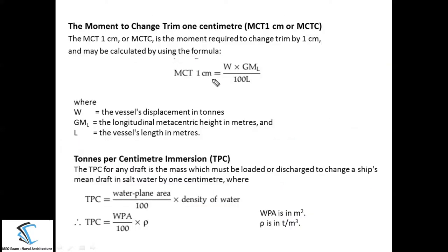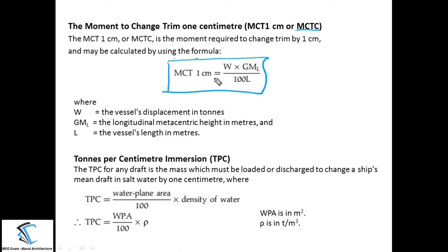Before starting the numericals, you need to understand two more concepts. The first is MCTC — Moment to Change Trim one Centimetre. For a particular ship at a particular draft, MCTC tells us how much moment is required to trim the ship by one centimetre. The formula is: MCTC = (W × GML) / (100 × L), where W is vessel displacement in tons, GML is the longitudinal metacentric height in metres, and L is the length of the ship in metres.